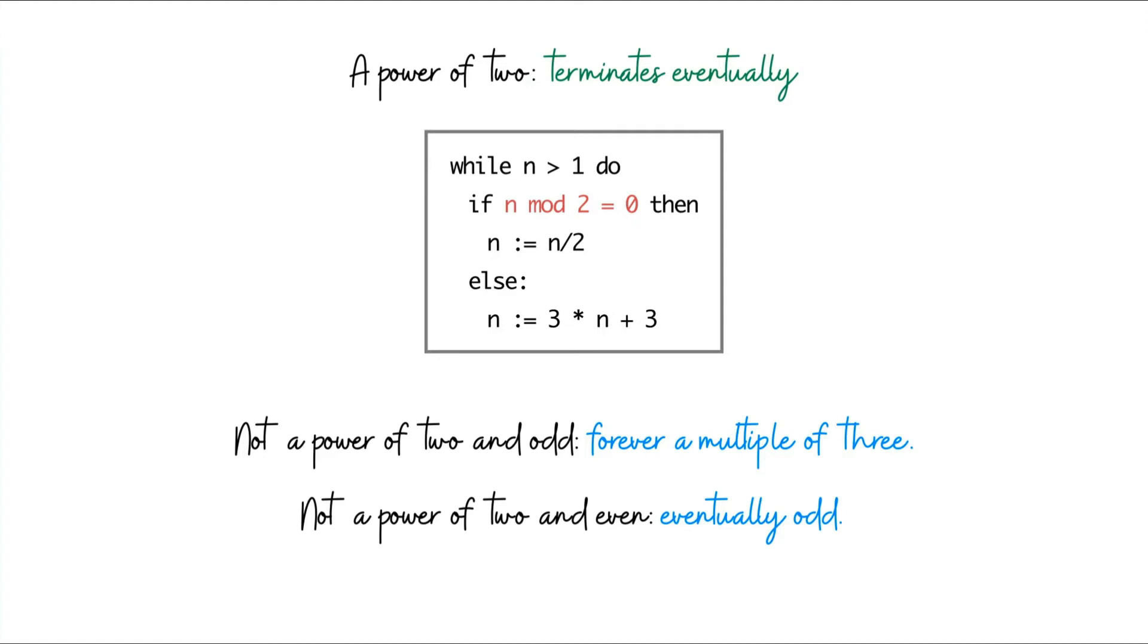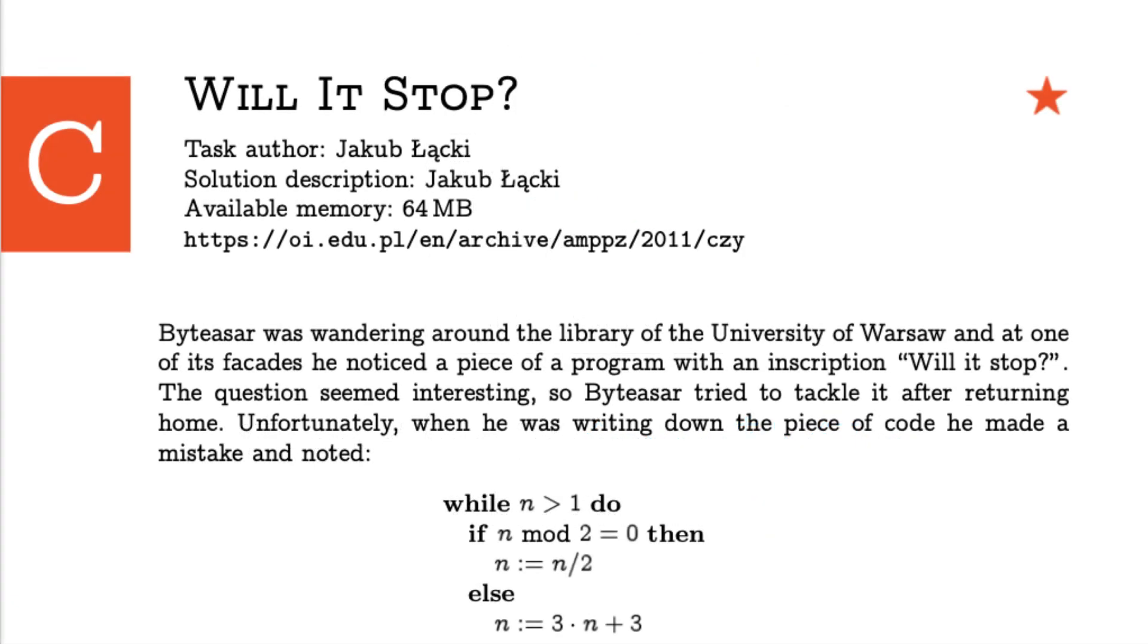Before we go further, let me show you the original problem statement so you can look at the story there. I know we're usually in a rush to get rid of the story and quickly identify the abstractions, but in this case the story has a bit of interesting trivia, so I want to tell you about it, especially now that we've more or less solved the problem. Here's how the problem statement goes: Baltassar, I hope I'm pronouncing that correctly, was wandering around the library of the University of Warsaw and at one of its facades he noticed a piece of a program with an inscription 'Will it stop?' The question seemed interesting, so Baltassar tried to tackle it. Unfortunately, when he was writing down the code, he made a mistake.